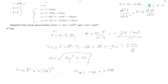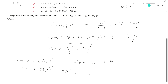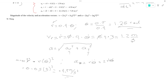We know that r_dotdot is zero and r is 0.5. So the radial acceleration is zero minus 0.5 times theta_dot squared, where theta_dot is 3 radians per second. That gives us 0.5 times 9, which is 4.5, with a minus sign. So the radial acceleration is negative 4.5 meters per second squared. The sign is important because acceleration has a direction.